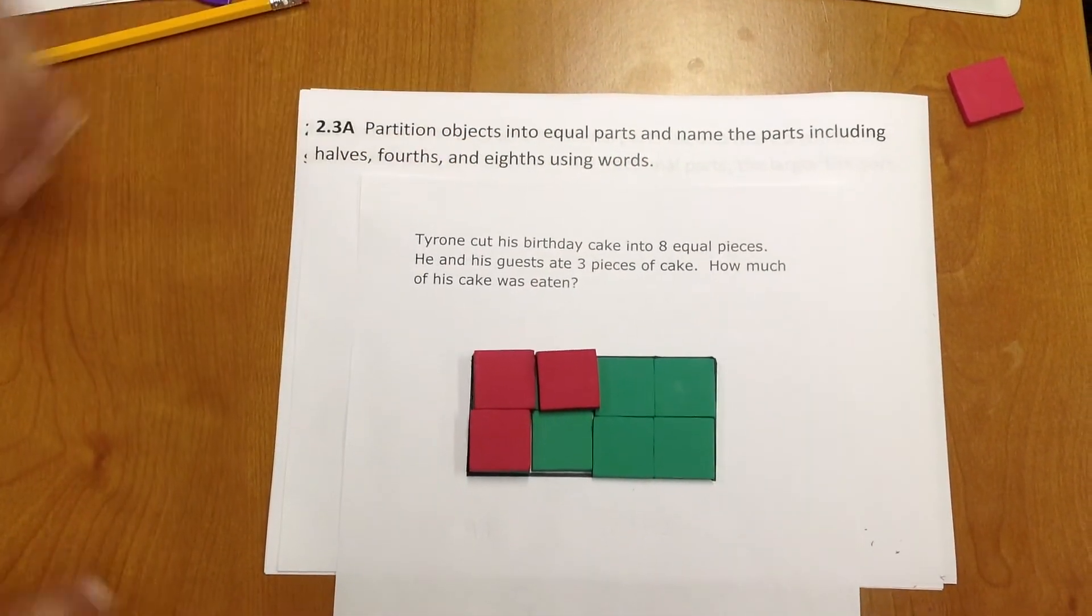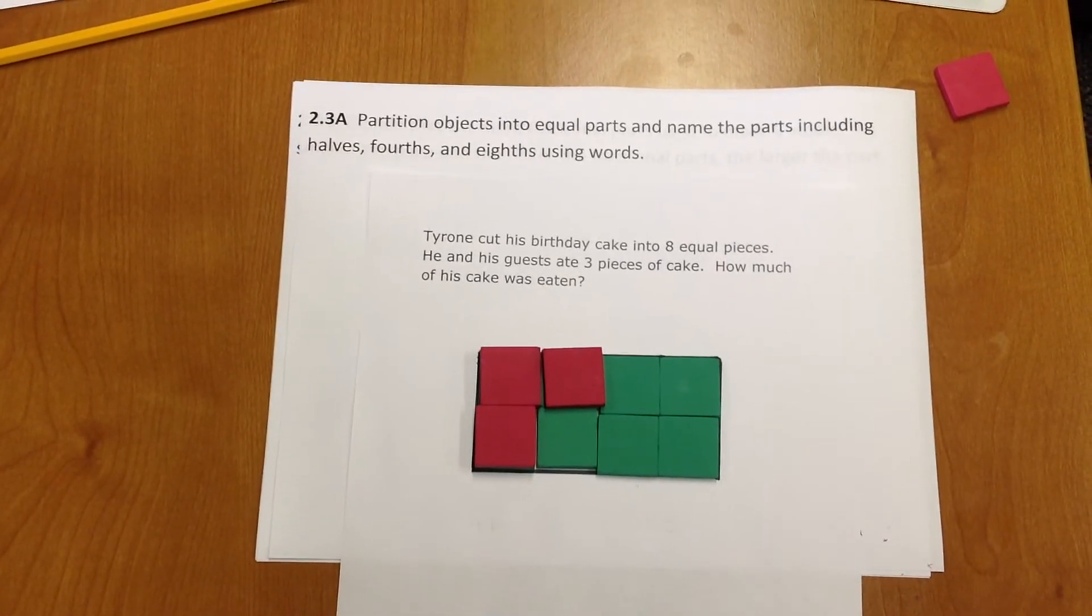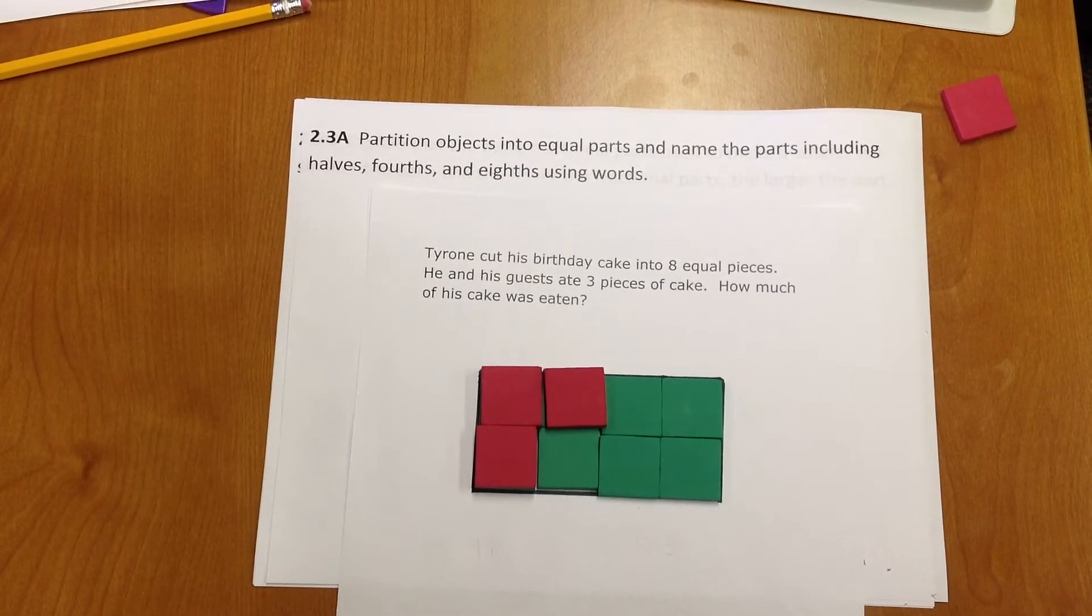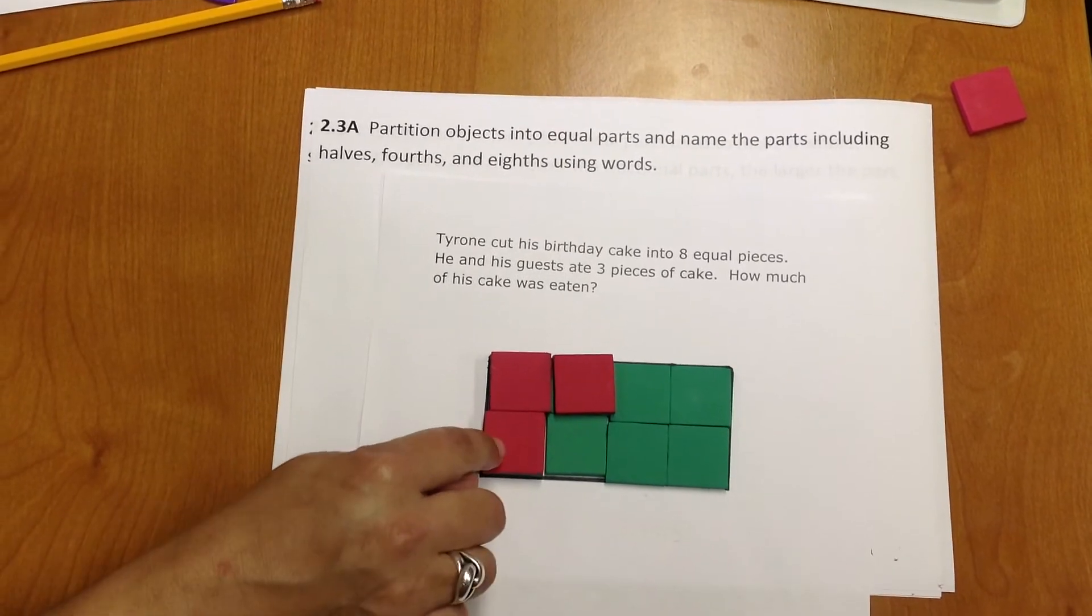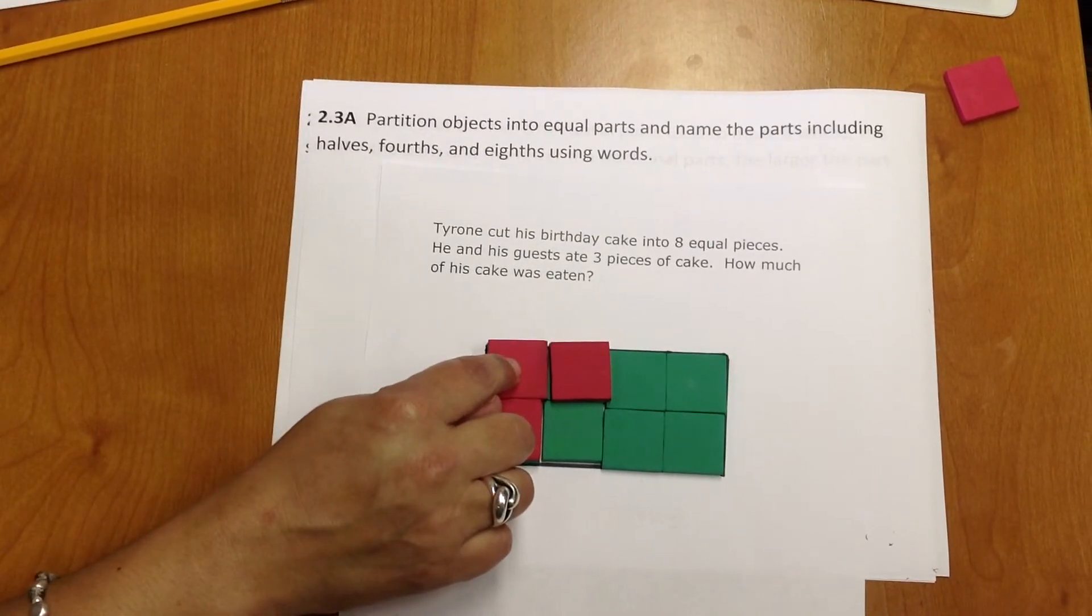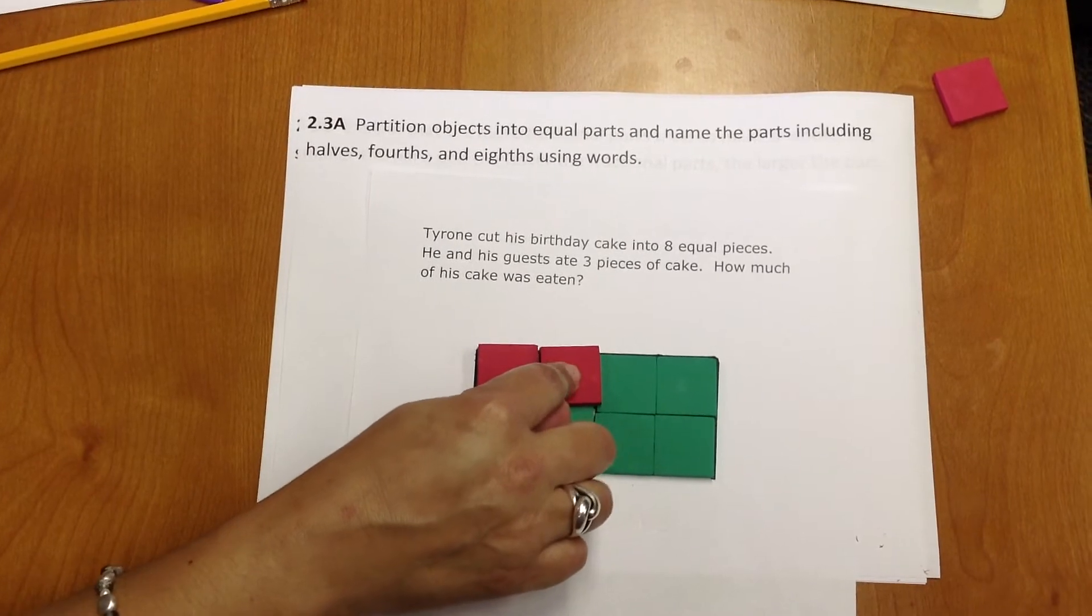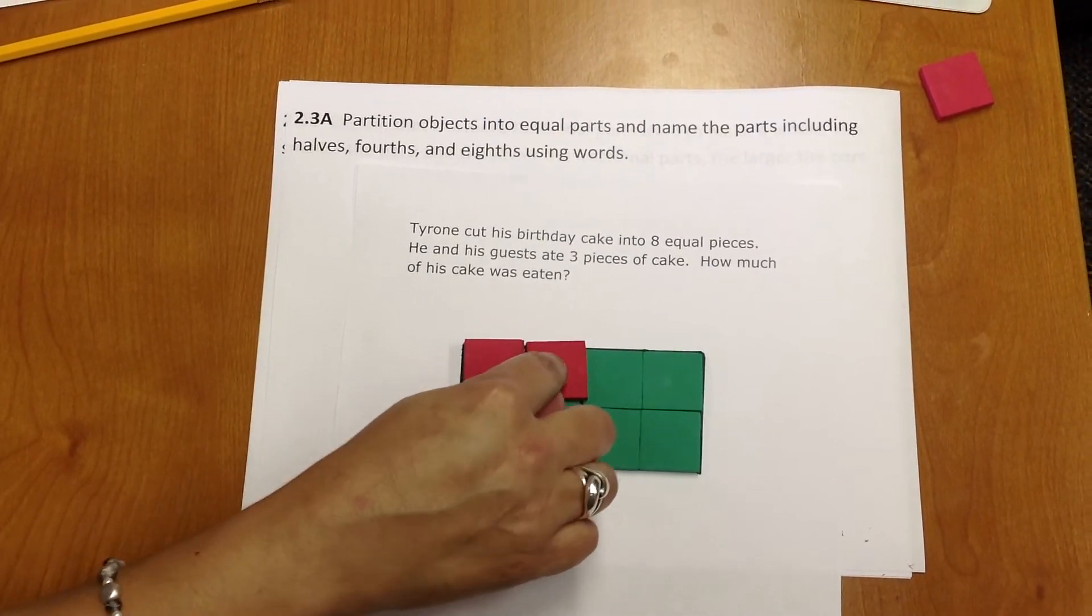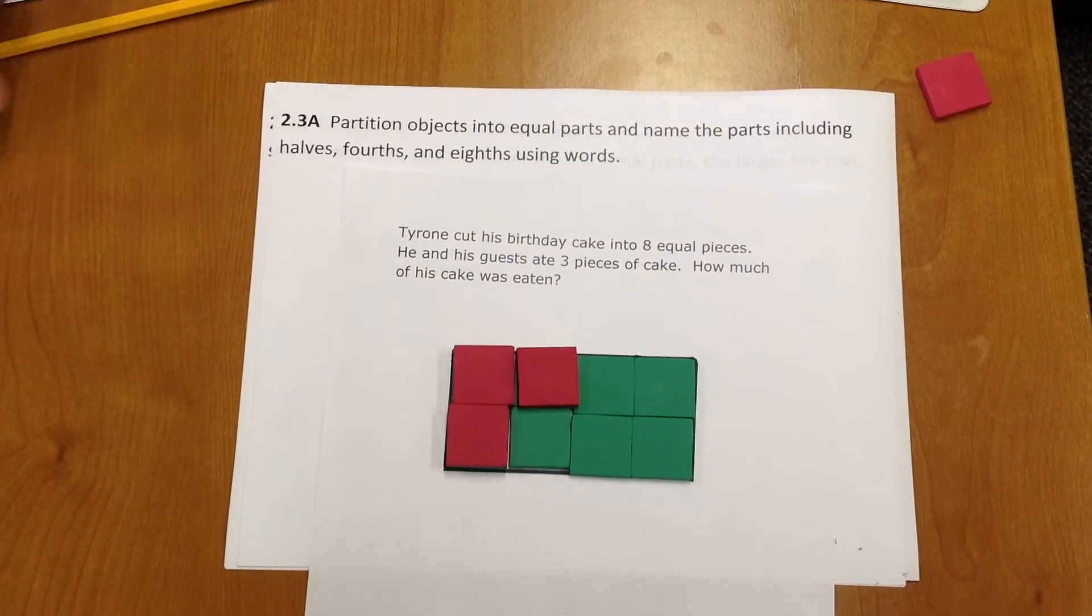Remembering that each piece is one-eighth, let's count and see how many pieces have been eaten. One-eighth, two-eighths, three-eighths of Tyrone's cake has been eaten.